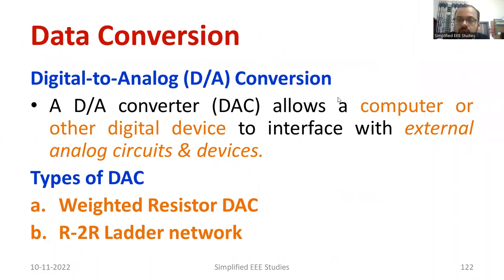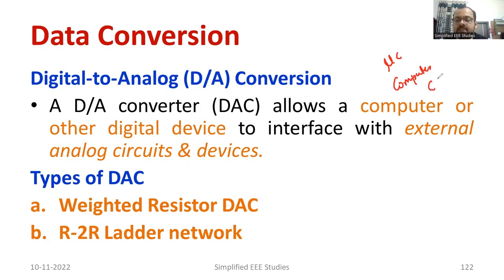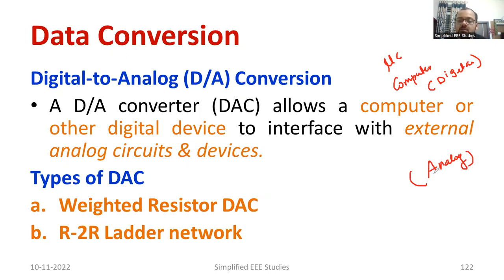Why is digital to analog conversion necessary? What is its importance? We have microcontrollers and computers whose output will be digital only. But there are different devices which operate only in analog conditions, with analog signals. So we need to interface the digital information with analog devices. The remedy is a digital to analog converter, also known as a DAC.